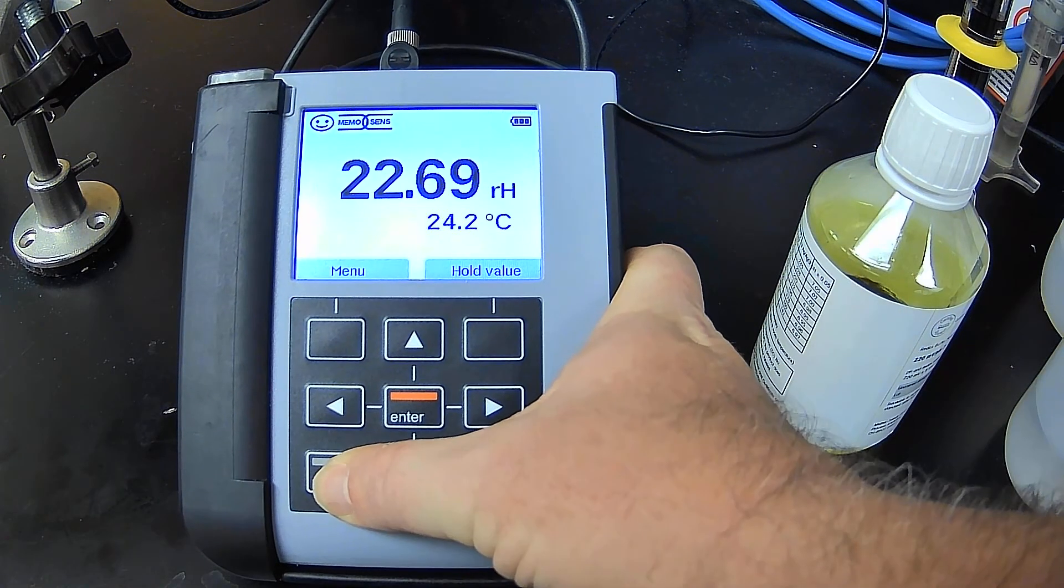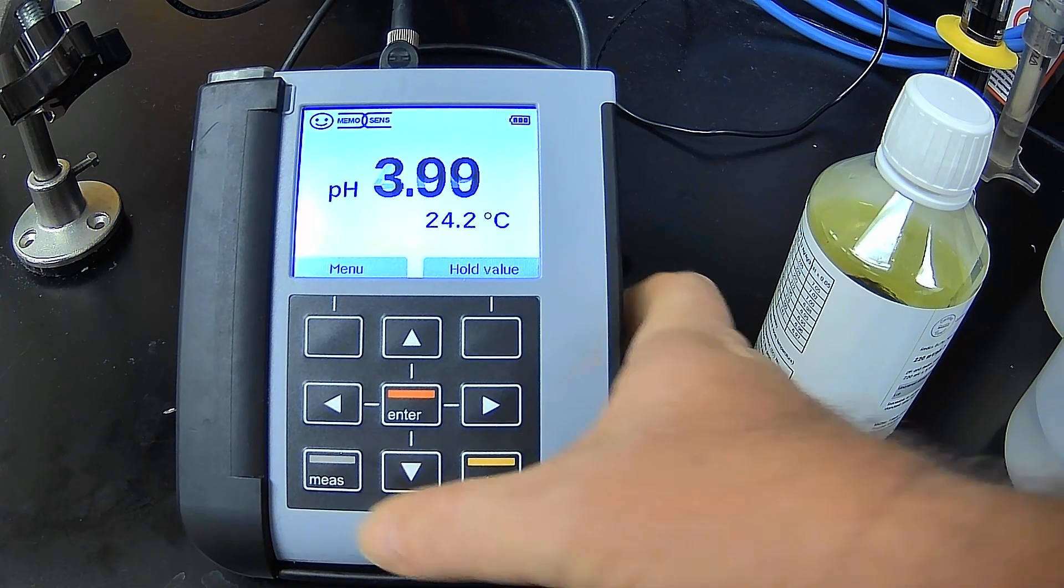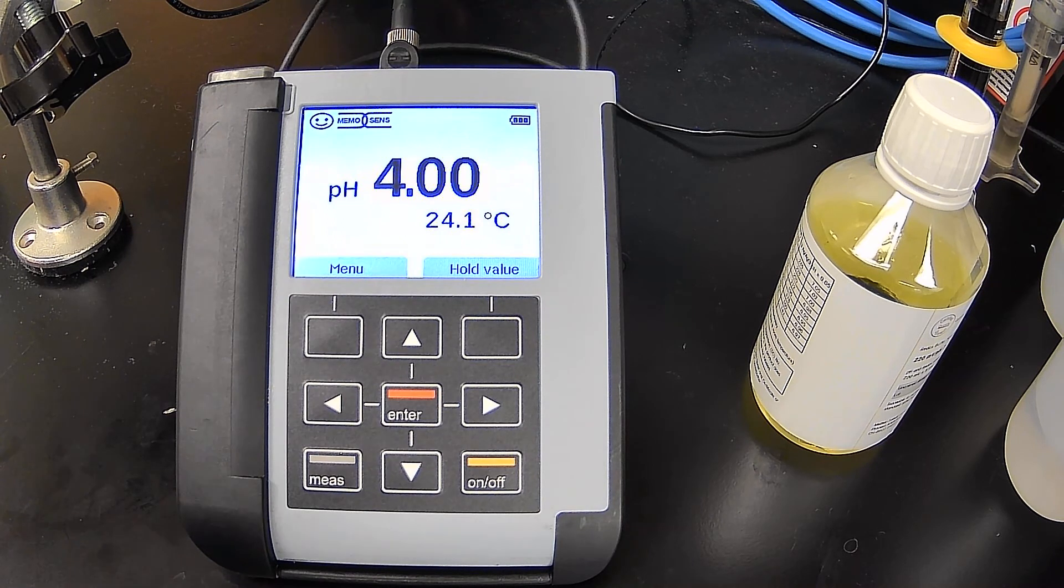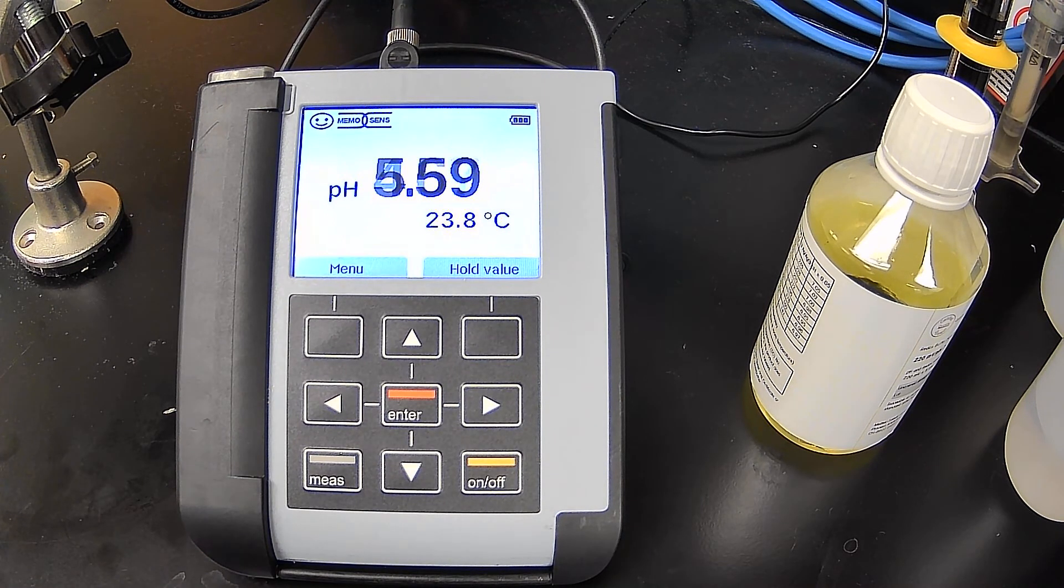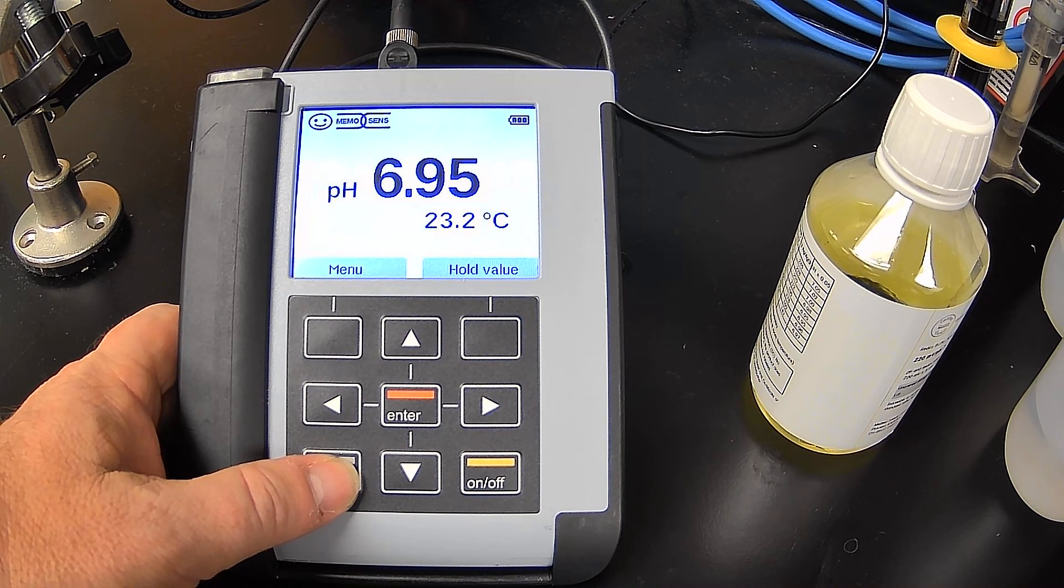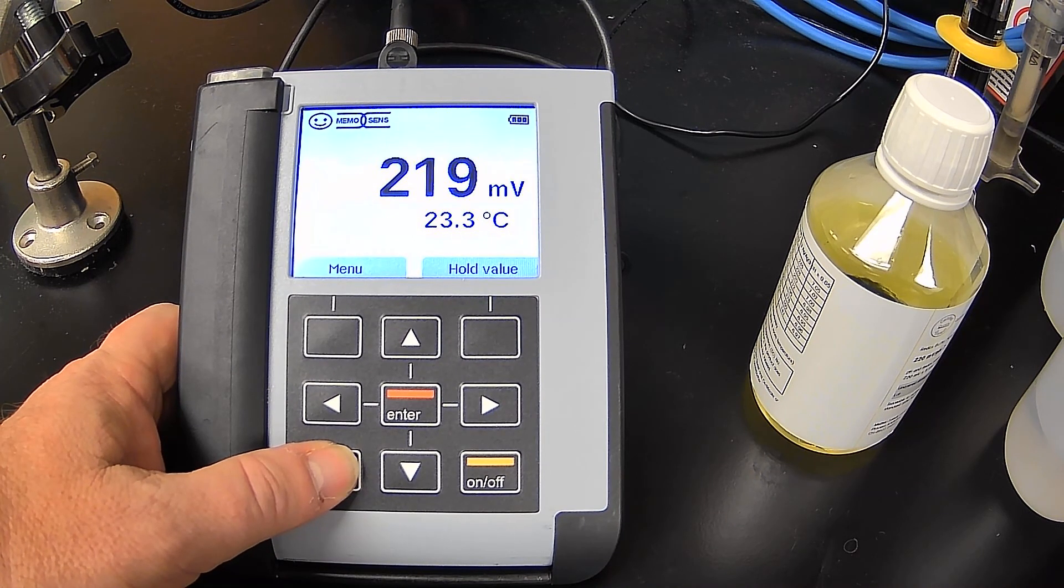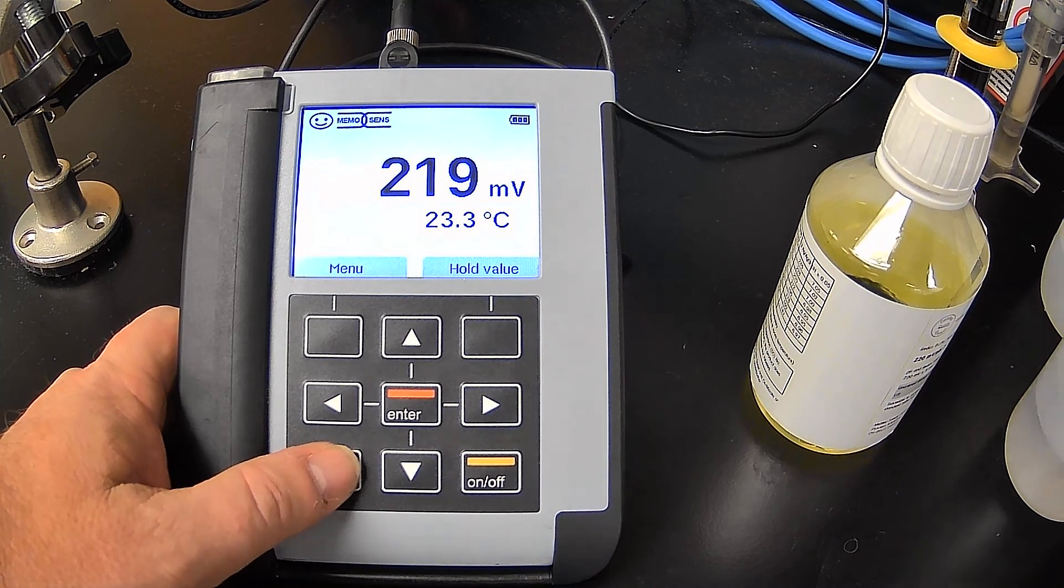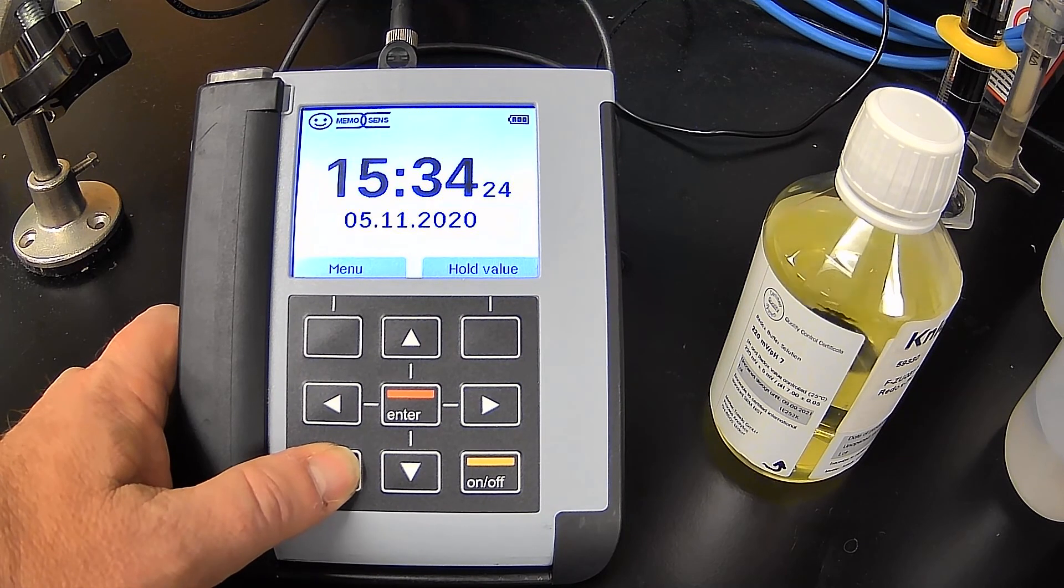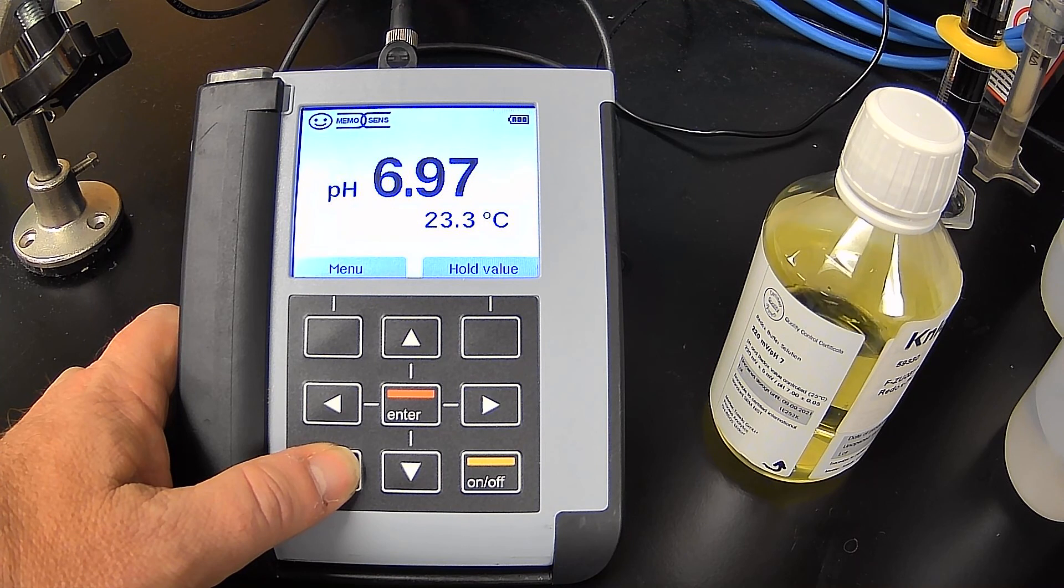There we go. And there's our pH value. 4. I'm going to go ahead and move it over to the 7. You can see it coming up. And we'll take a look at the ORP value, which is 219. And by the way, what you don't see is that we're in the same ORP solution we started with, which is 220 millivolts, and also a buffer of 7. 6.96. I'd say we're in good shape.